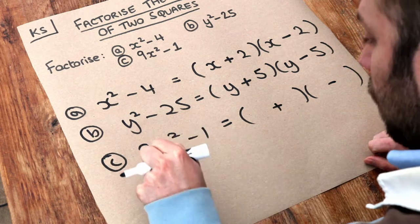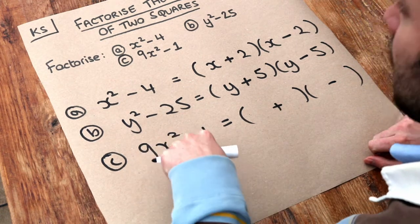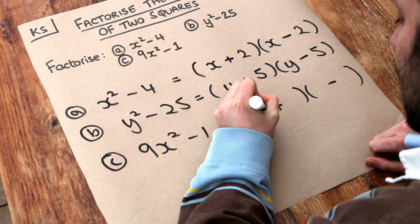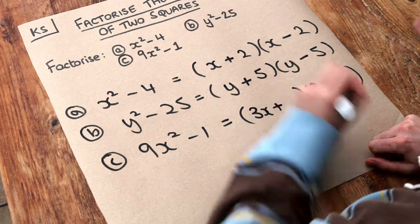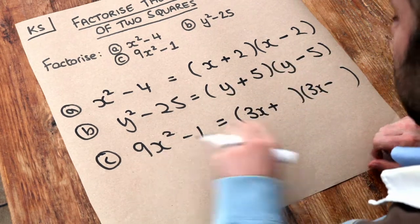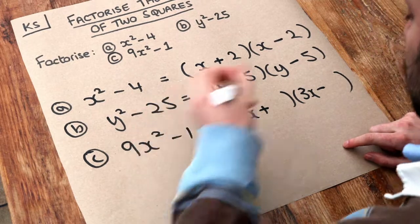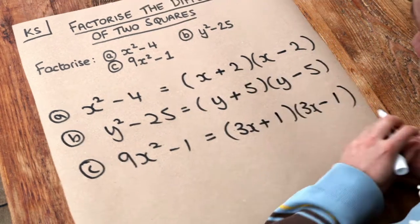Well, the square root of 9 is 3, and the square root of x squared is x, so it's 3x. 3x times 3x would give you 9x squared, so don't forget to square root the 9. And then what's the square root of 1? Well, it's just 1. 1 squared is 1.